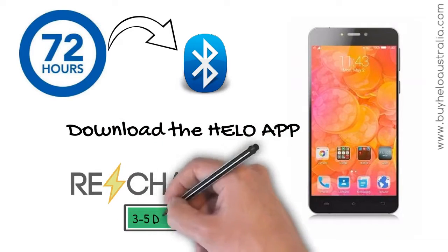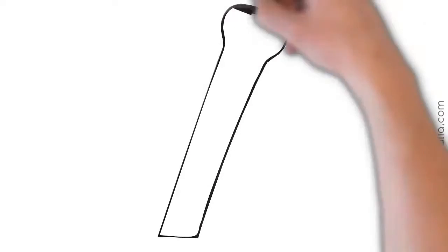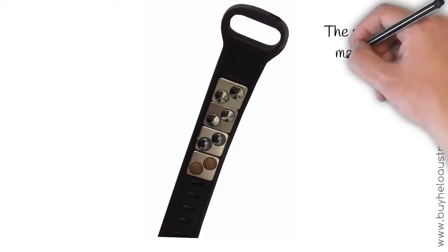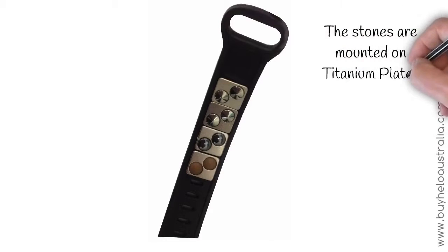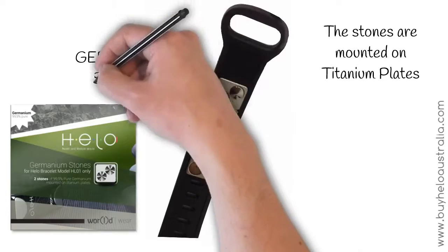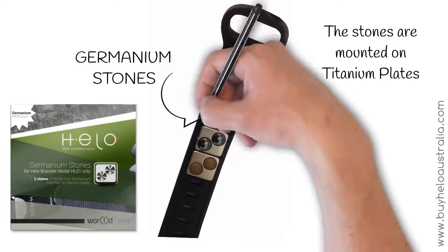Along the whole length of the band on the inner side of your HELO are small titanium plates. These plates contain specifically designed stones which give special benefits to your body. There are two germanium stones and two hematite stones.